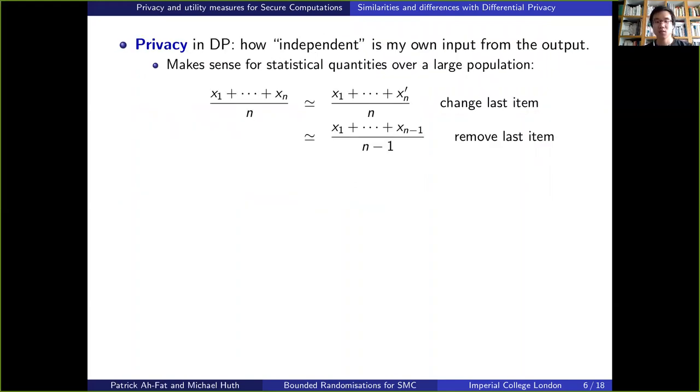So let us now discuss why the notions of privacy and utility used in differential privacy might be questionable and might not be best suited to our problem. First, the notion of privacy in differential privacy totally makes sense when we compute statistical quantities over a large population. For example, it's a reasonable privacy guarantee to ensure that the average of a lot of values will not be dramatically affected by a single value, so that changing or removing the last item will not have a dramatic effect on the result of the computation.